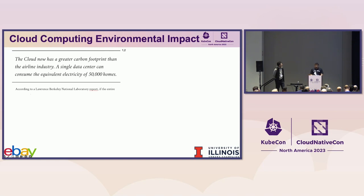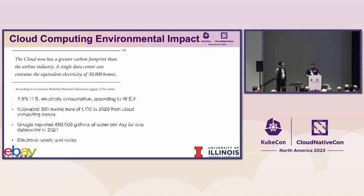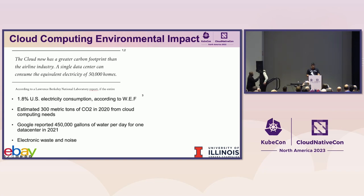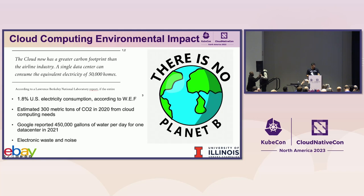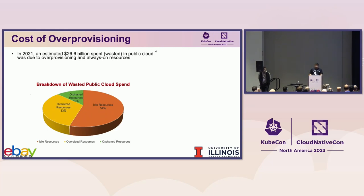Over-provisioning comes with a cost. First, there is the environmental impact. A case study estimated that a single data center consumed the power equivalent of 50,000 homes. That crypto energy hunger is now being replaced by AI energy needs, and AI workloads tend to be compute intensive and network intensive. Data centers also have significant cooling needs and require a lot of water, with CO2 emissions impact and electronic waste as well.